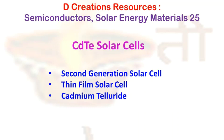CdTe solar cells make use of semiconductors. In particular, they are made using PN heterojunctions containing a P-doped cadmium telluride layer and an N-doped cadmium sulfide — that means CdS — layer. So CdTe and CdS is the combination, and sometimes even magnesium zinc oxide can also be used.